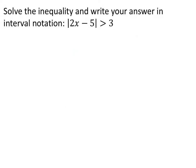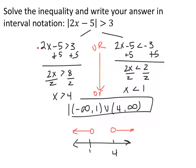Now here's another one: absolute value of 2x - 5 is greater than 3. Pause the video and do the same thing. Splitting: 2x - 5 > 3 OR 2x - 5 < -3 — flip the inequality and change the sign. It's an OR because it's a greater than. Adding 5 gives 2x > 8 or 2x < 2. Dividing by 2: x > 4 or x < 1. Interval notation: (-∞, 1) ∪ (4, +∞), parentheses on all ends. Graph: open circles on both 1 and 4, arrows going out like oars on a boat.